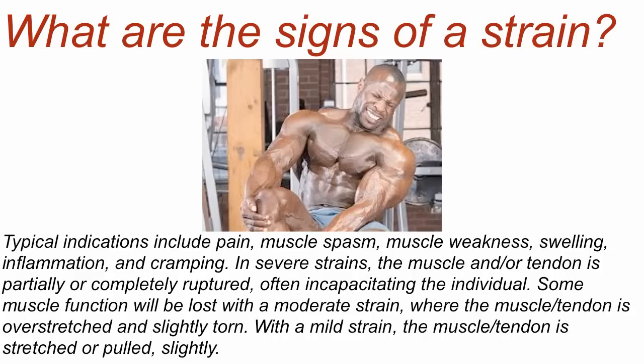In severe strains, the muscle and/or tendon is partially or completely ruptured, often incapacitating the individual. Some muscle function will be lost with a moderate strain, where the muscle or tendon is overstretched and slightly torn. With a mild strain, the muscle and tendon is stretched or pulled slightly.